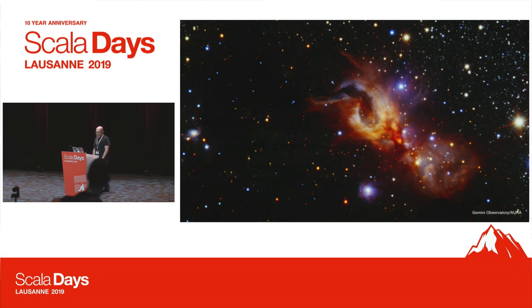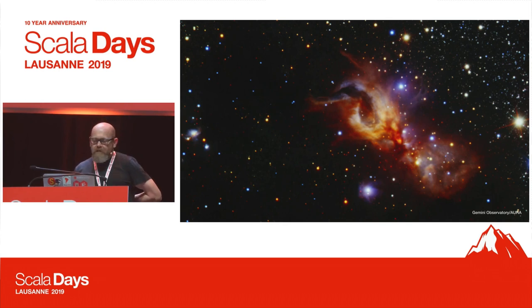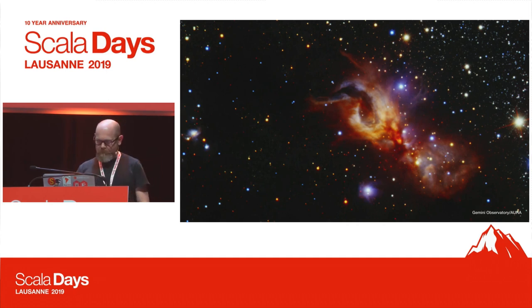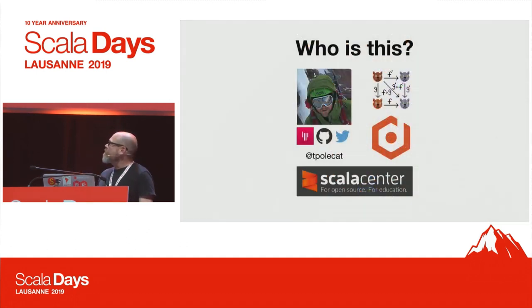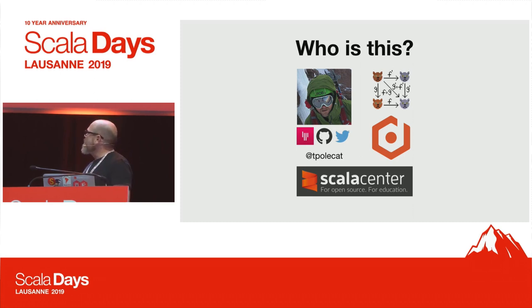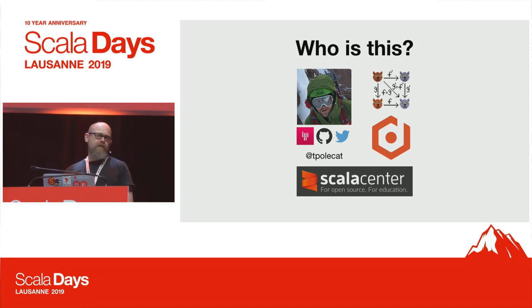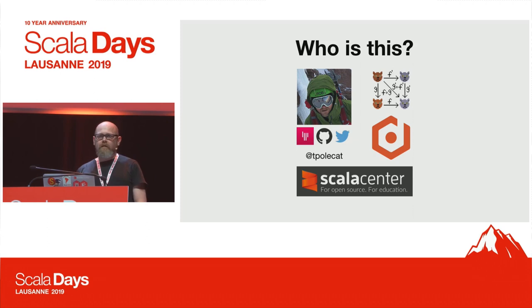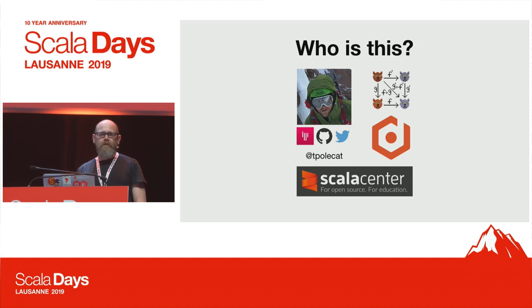This is a near-infrared image of a nebula called GGD27. It was taken with an instrument called Flamingos II at the Gemini South Telescope in Chile. My name is Rob. I'm really easy to find online — I'm T. Polkett everywhere. I am a Type Level member. I work on some of the Type Level projects, and I am your community representative for the Scala Center, along with Bill Venners. If you have questions or ideas about what Scala Center is working on or should be working on, please reach out and talk to me or to Bill.